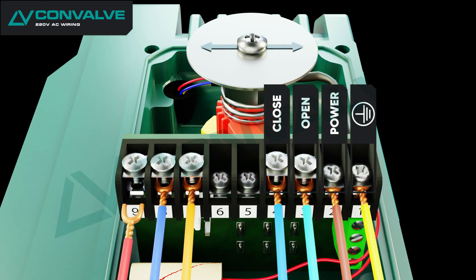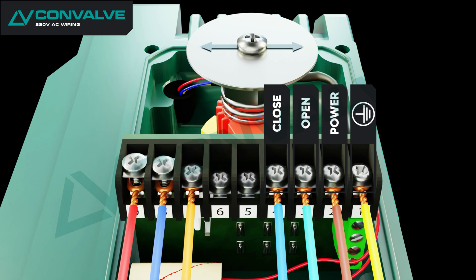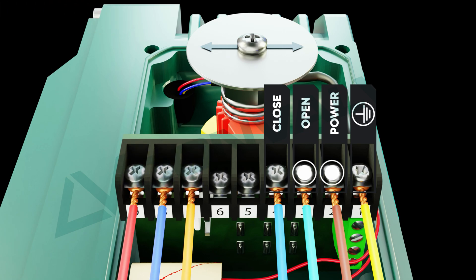To rotate or open the actuator in the counter-clockwise direction using AC voltage, apply power to terminal 2 and terminal 3. The actuator will rotate counter-clockwise until it reaches the internal limit switch and automatically shuts off.